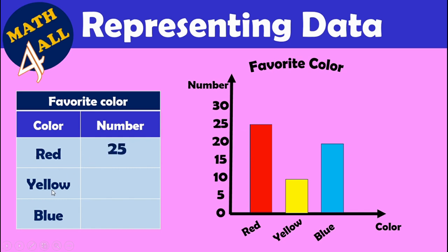The next color is yellow — 10 people chose yellow, so you will write 10 in the table. The last color is blue — 20 people chose blue. Complete the table with these values.